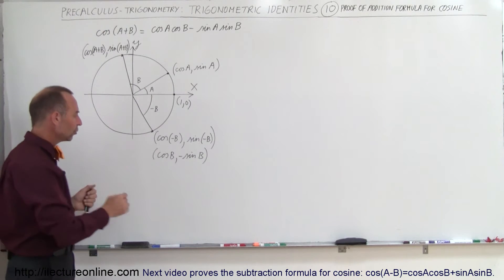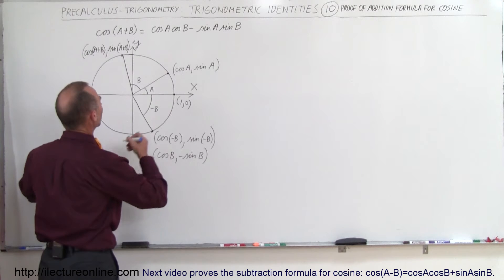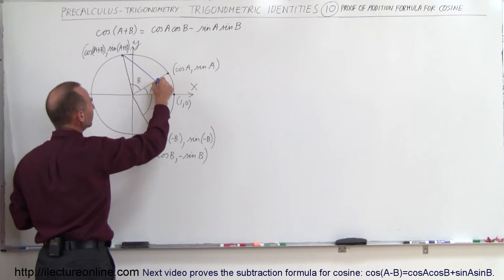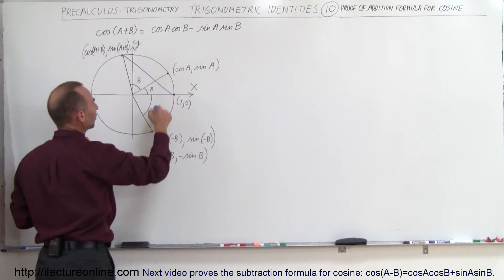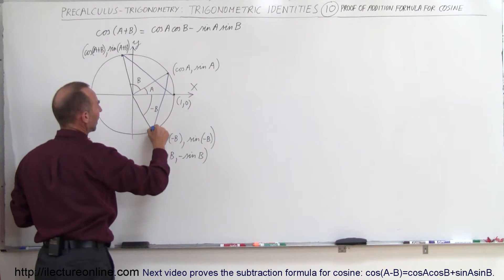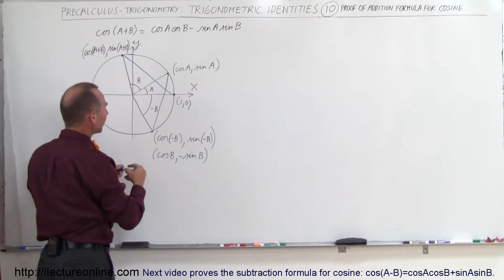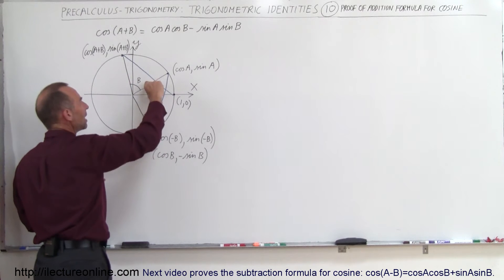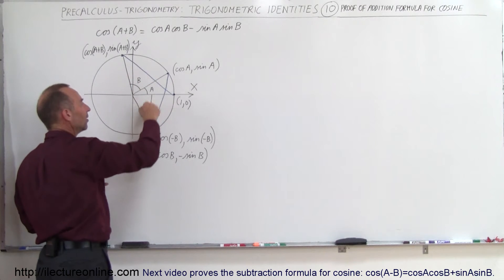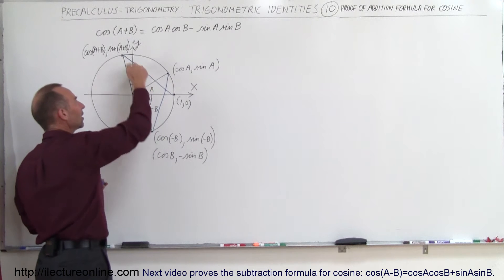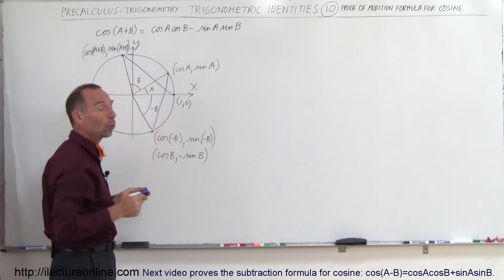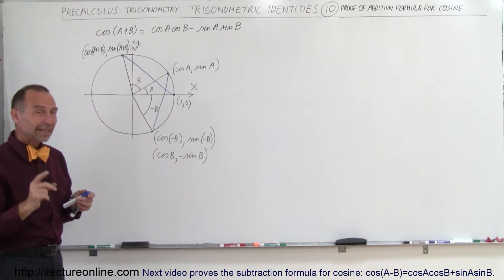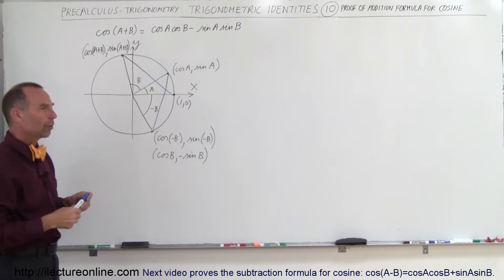Now we draw a chord from one point to another, and a second chord connecting the other pair of points. Since the angle A plus B equals the angle A plus negative B, these two central angles are equal, which means the lengths of those two chords must be the same.